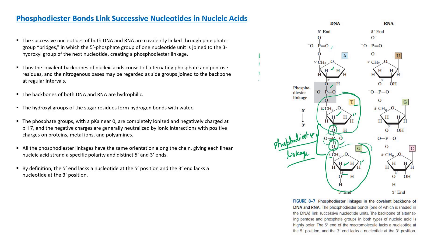Since a nucleotide's three components are pentose sugar, phosphate, and nitrogenous base, the backbone consists of sugar and phosphate, while the nitrogenous bases are side groups. The covalent backbone is an alternating phosphate and pentose sugar. Because phosphate groups are negatively charged, they are responsible for the overall negative charge on DNA.